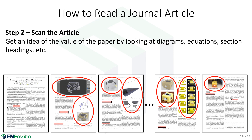Step two is to scan the article. This really builds on the abstract — you've looked at the abstract to see what the paper contains, now you're going to go see for yourself. Look at the figures, section headings, equations, and high-level things like that. That's going to give you a much better idea of what's in the paper. You're just scanning it to get a general idea of the problems they're addressing and perhaps their solutions.